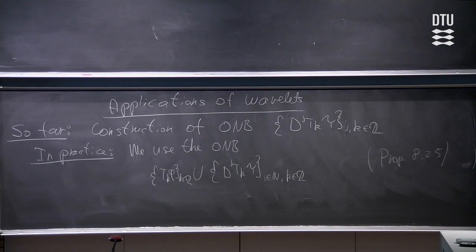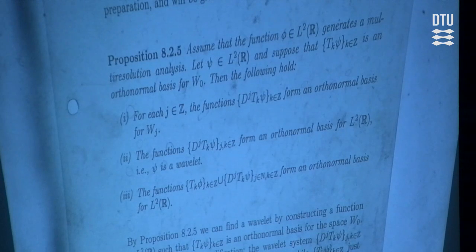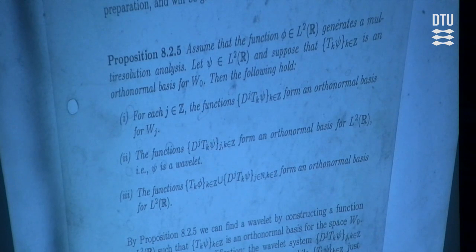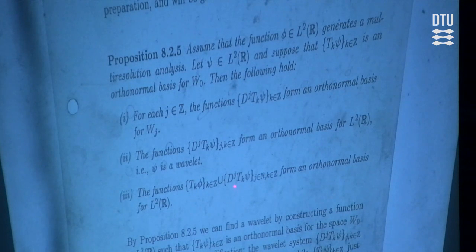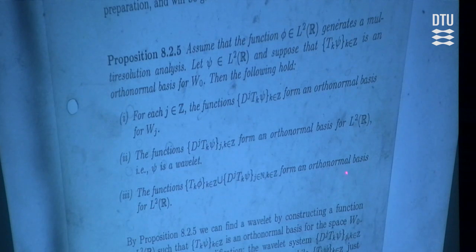It is by no means trivial that you can take this orthonormal basis and replace by what is here, but this is one of the steps in the construction of the wavelet that I didn't go through for you. This is something you will see if you look at proposition 8.8. It is contained in part 3: the functions T_k φ and then D^j T_k ψ also form an orthonormal basis for L²(ℝ). So what we will do now is to work with exactly that orthonormal basis.